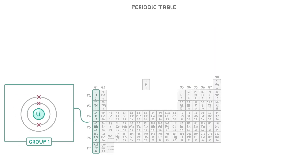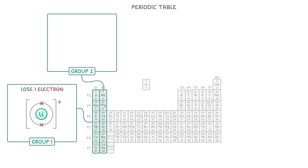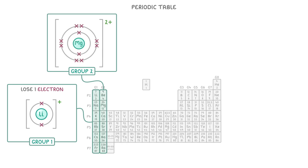For example, group 1 elements, which we call the alkali metals, only have to lose 1 electron to have a full outer shell, which doesn't require very much energy, so they easily lose that electron to become 1+ ions. Similarly, group 2 elements can easily lose 2 electrons to become 2+ ions.